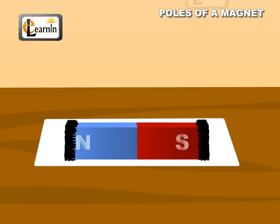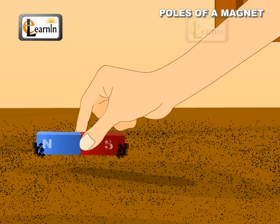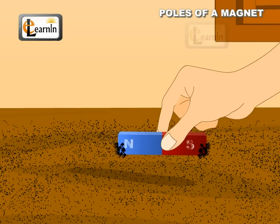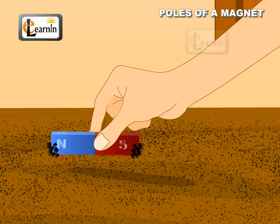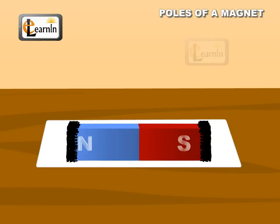These two ends of the magnet are called the poles of the magnet. They are the points of the magnet where all the iron particles get attracted. These points are generally present at the ends of a magnet.